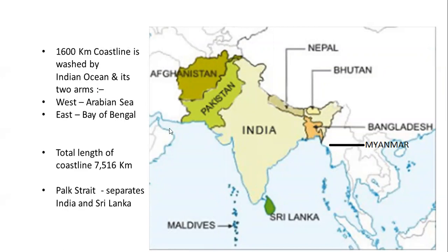India has a 7,516 kilometer total coastline. If you see the bottom part of India, it is called a peninsula because three sides are covered with water. This portion is surrounded by water. In this area, we have the Indian Ocean, which branches into two: on one side is the Arabian Sea, and on the other side is the Bay of Bengal. Towards the east it is the Bay of Bengal; towards the west it is the Arabian Sea. A small water body divides Sri Lanka from India — that water body is called the Palk Strait.